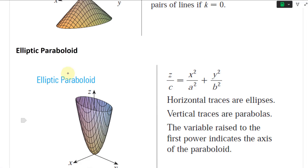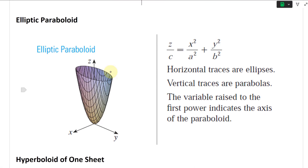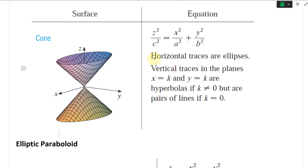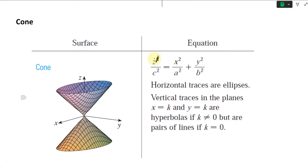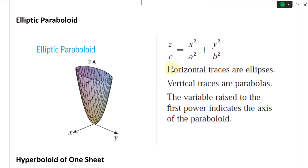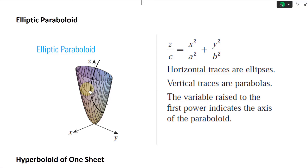And then you also have the elliptic paraboloid right here. This one is similar to the ellipsoid, except instead of z squared, you have z to the first power — you get rid of the squared on one variable. So the vertical variable has a power of one. Horizontal traces are ellipses. Vertical traces are parabolas — that's the elliptic paraboloid. You have an ellipse this way, then parabolas going up the vertical. The variable raised to the first power indicates the axis of the paraboloid.